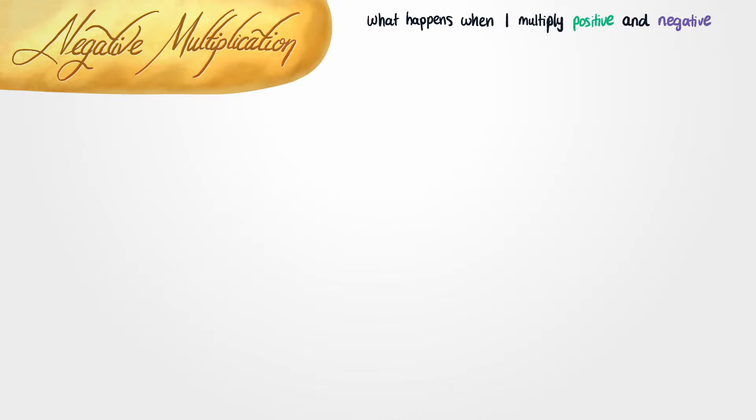Welcome to our lesson on negative multiplication. In this lesson we're going to figure out exactly how negative numbers fit into multiplication. The real question I want to answer is how exactly do negative numbers behave when you multiply them by positive numbers and by each other? To answer this properly, we're going to review how multiplication works for positive numbers first, and then extend it to deal with negative numbers.